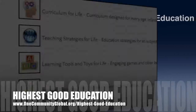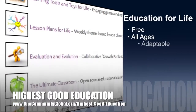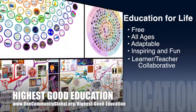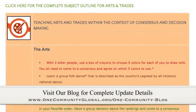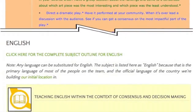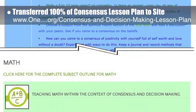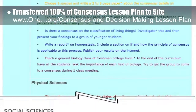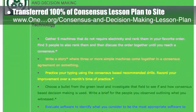One Community's approach to Highest Good Education is open source and free shared, designed for all age groups, adaptable to any schooling environment, inspiring and fun for all participants — learner, teacher, and collaborative — and it includes U.S. common core standards. This week, the core team transferred all of the written content for the consensus and decision-making lesson plan to the website. This lesson plan is purposed to teach all subjects to all learning levels in any learning environment using the central theme of consensus.